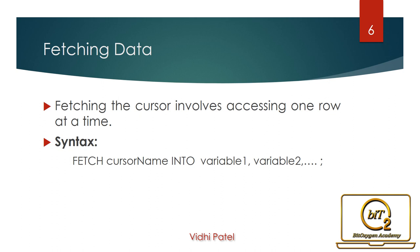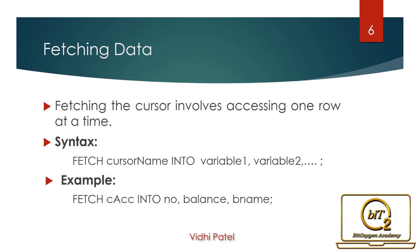After opening the cursor, we cannot process the selected row directly. We have to fetch the column values of a row into memory variables using the FETCH statement. This retrieves data from the current row in the active dataset and stores them into given variables. Data from a single row is fetched at a time. After fetching data, the row pointer is updated to the next row in the active dataset. Variables should be compatible with the columns specified in the SELECT statement. In the example, data from the cursor is fetched into variables using FETCH.